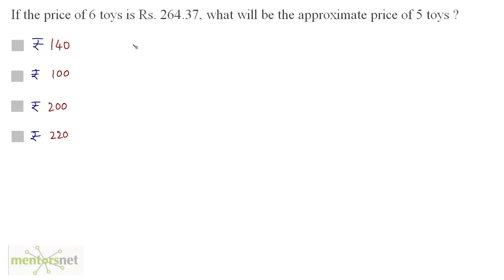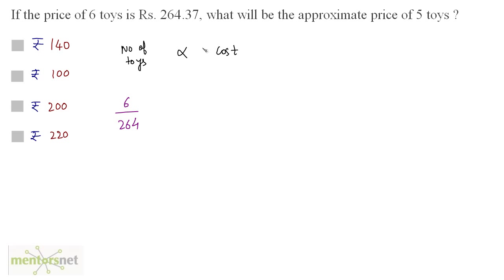Again we have two quantities here: the number of toys and the cost. The more the number of toys, the more the cost. So the number of toys is directly proportional to the cost. Let us find the ratios. The price of six toys is 264.37, so one ratio is 6 by 264. We can take 264 because they have asked for the approximate price and the options differ a lot, so I can ignore 0.37.